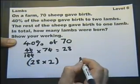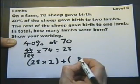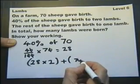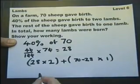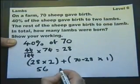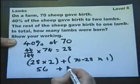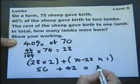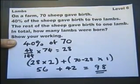And the rest of the sheep gave birth to one lamb. So what's the rest of the sheep? So we've got to do 70, take away 28. And multiply that answer by one. So that's 56. This is 42. So the answer is 98 lambs all together.